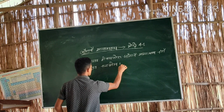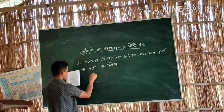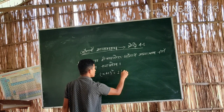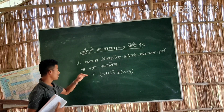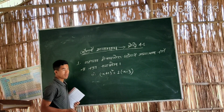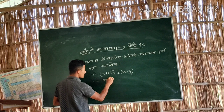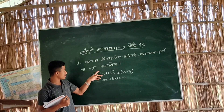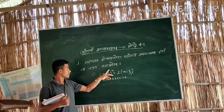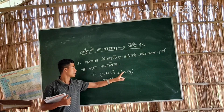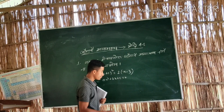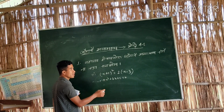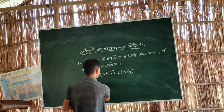First question: justify — x plus 1, whole square, equal to 2 times x minus 3. So we have a question because we have ax squared plus bx plus c equal to zero. So the question is that x plus 1 whole square is equal to 2x minus 3.